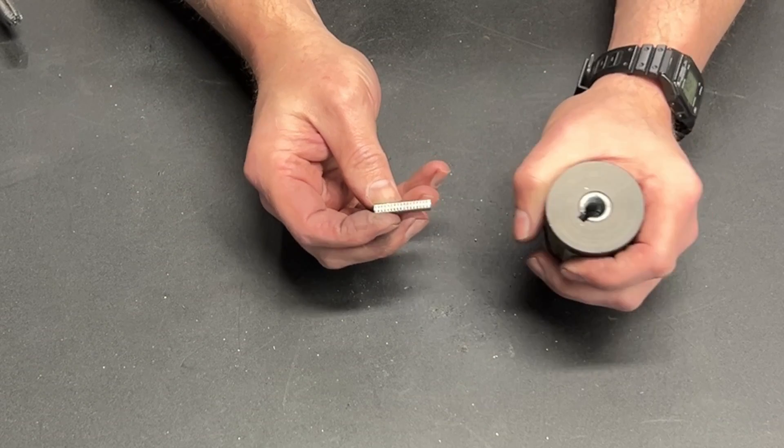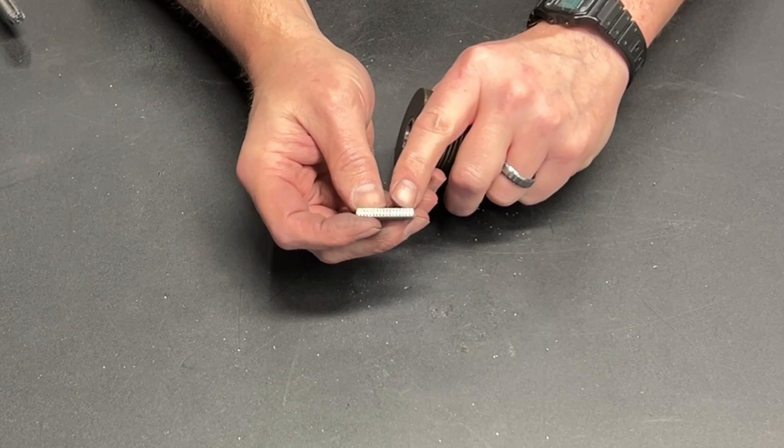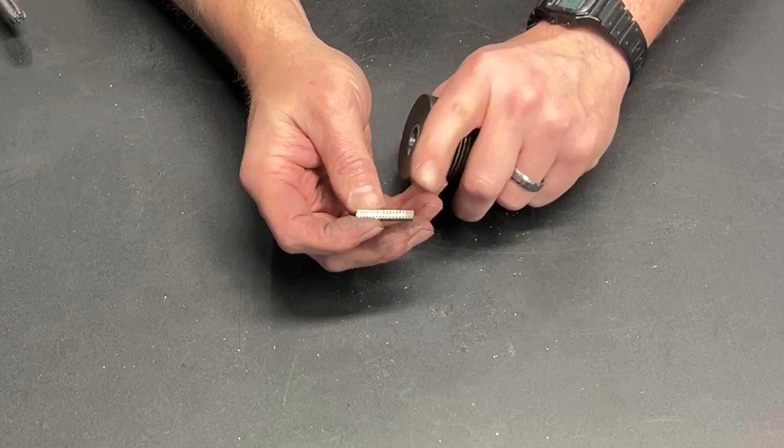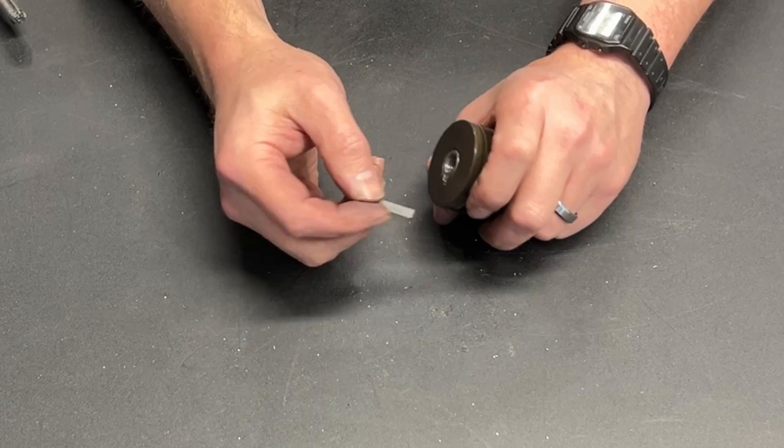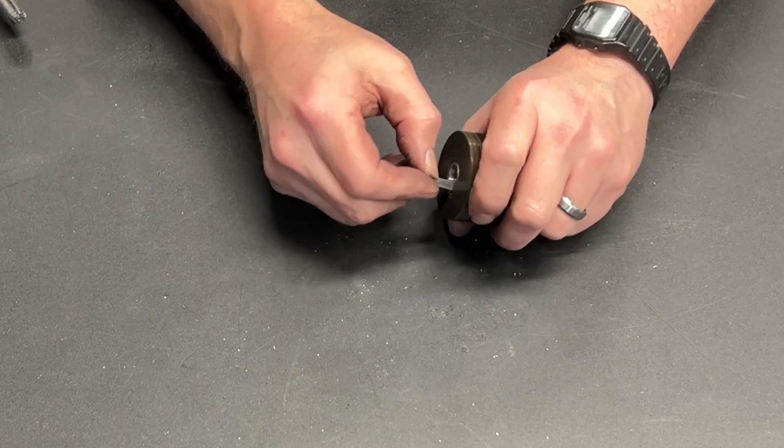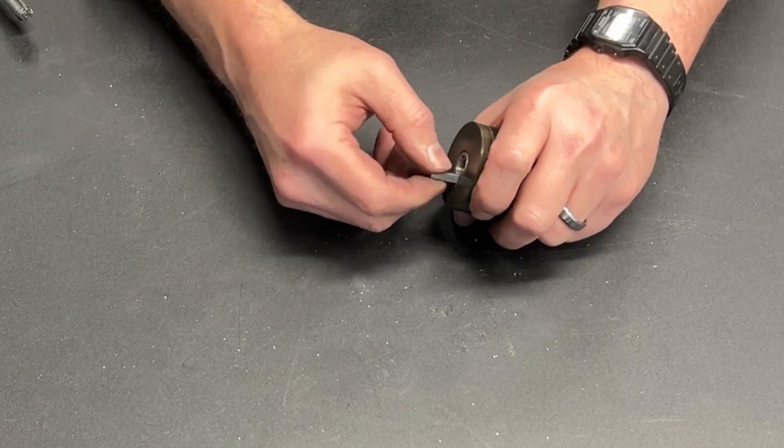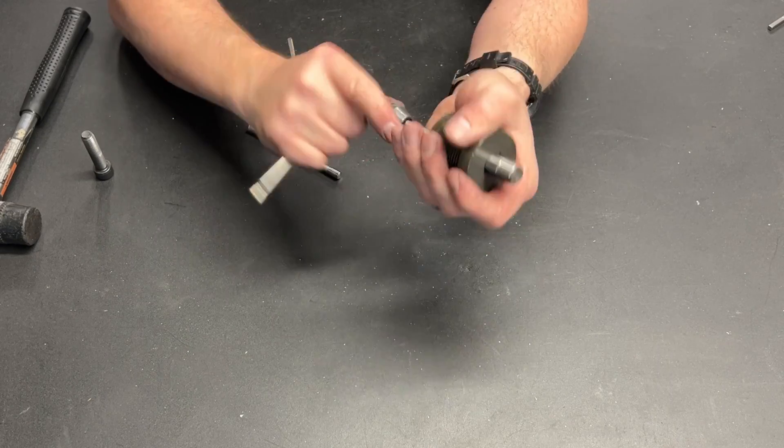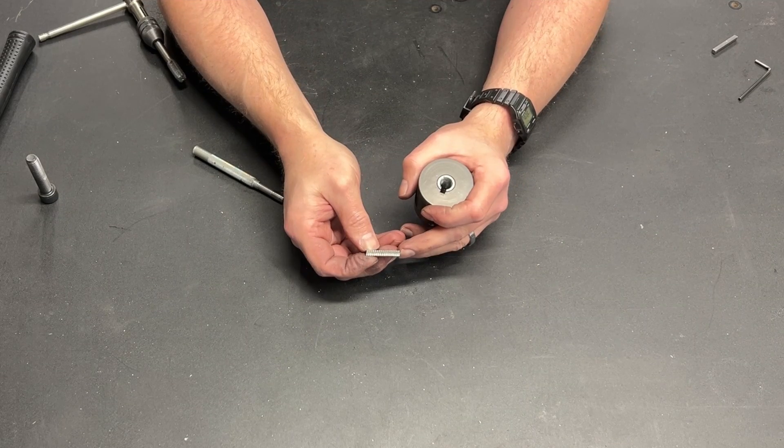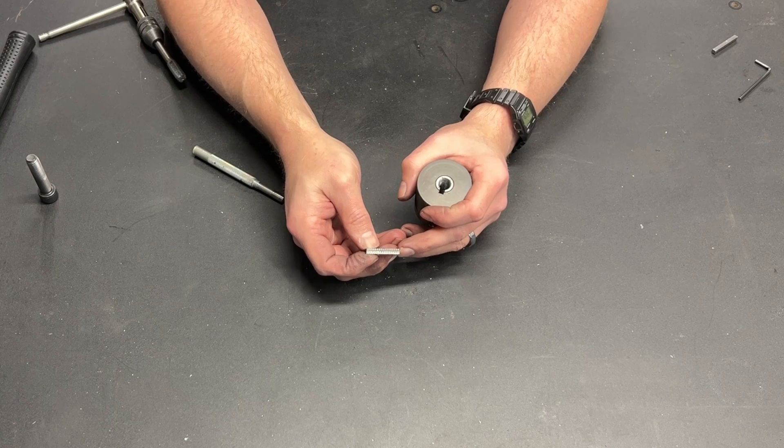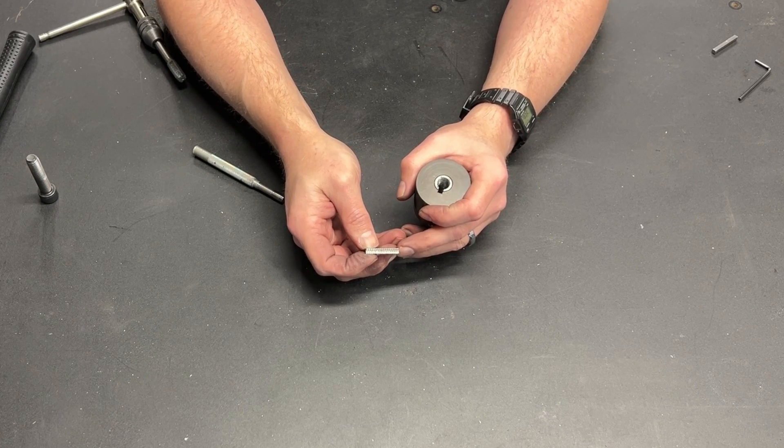Now, because the tap is tapered at one end, you actually want to flip it around and go from the other end. So that's exactly what we're going to do. Fully threaded the full length. And while that's good enough, it's probably not good enough for me.